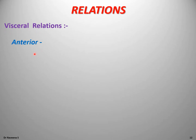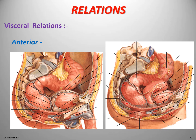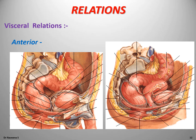Visceral relations of the rectum: anterior relations differ in males and females. In the upper part where the rectum is covered by peritoneum, it is related with sigmoid colon and coils of small intestine in both sexes. In the lower part, the non-peritoneal rectal ampulla is related in males with the base of the urinary bladder, seminal vesicles, ampulla of the ductus deferens, and posterior surface of the prostate gland — separated by the rectovesical fascia of Denonvilliers. In females, the rectal ampulla is related with the posterior vaginal wall, separated by an ill-defined rectovaginal fascia.